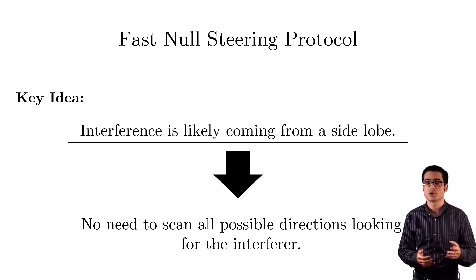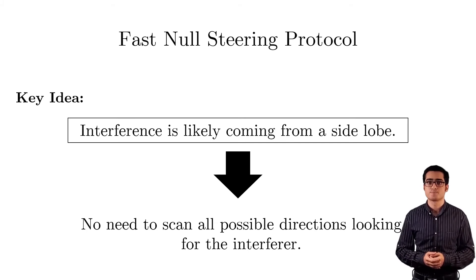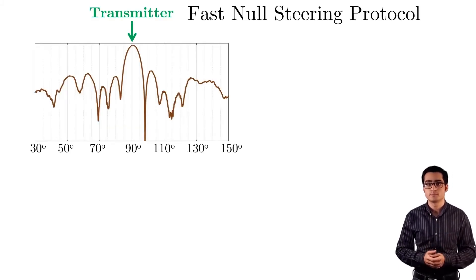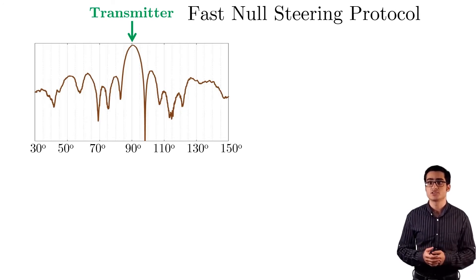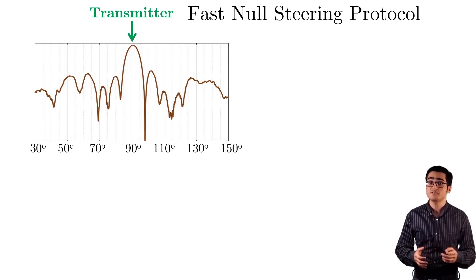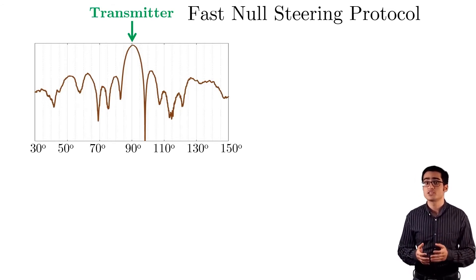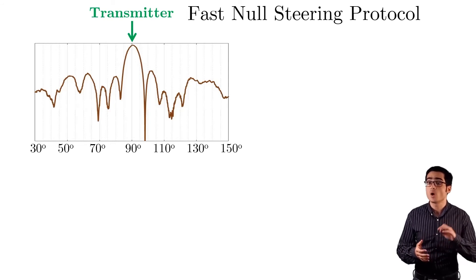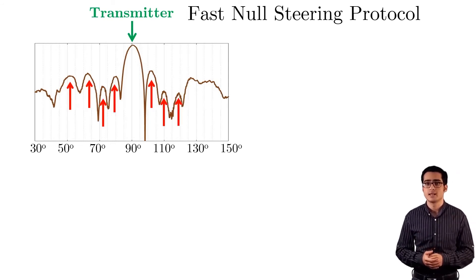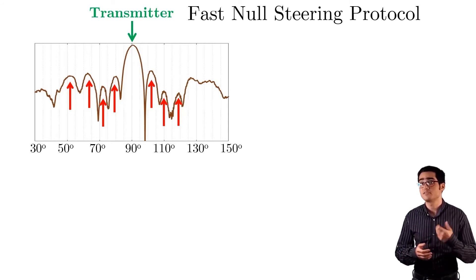Let me show you how it works through an example. This figure shows the beam pattern versus the direction of the signal. Let us say our transmitter is along 90 degrees, and hence our main beam is towards 90 degrees. If there is interference, then the interference is likely to have come from one of these side lobes, shown in red here. Let us say that the interference is at 75 degrees.